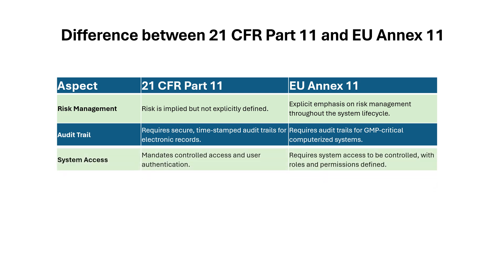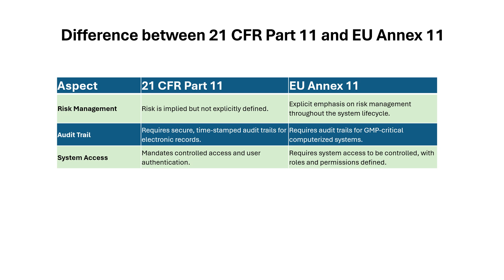Next is system access. In 21 CFR Part 11, it mandates controlled access and user authentication. Whereas EU Annex 11 requires system access to be controlled with roles and permissions defined. Both guidelines address authorized access to the system with defined user privileges, and there should be no unauthorized access to the system.